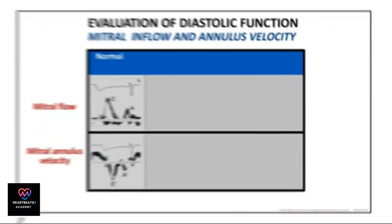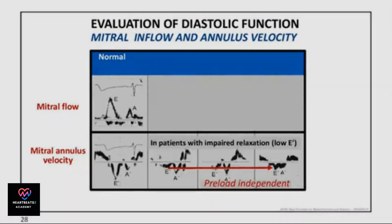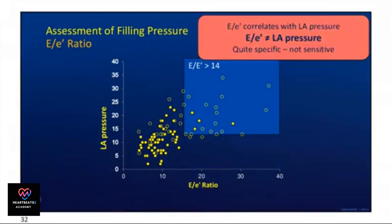Mitral inflow and annulus velocity are crucial in evaluating diastolic function. Assessing filling pressure with the E/E' ratio correlates with left atrial pressure.